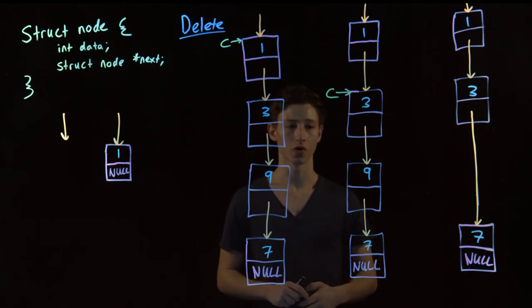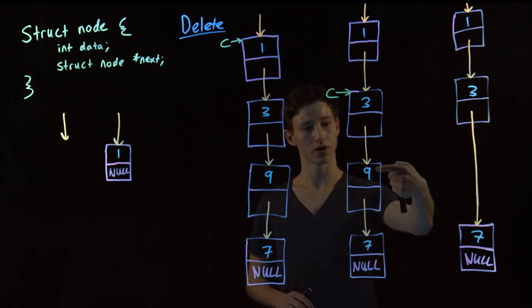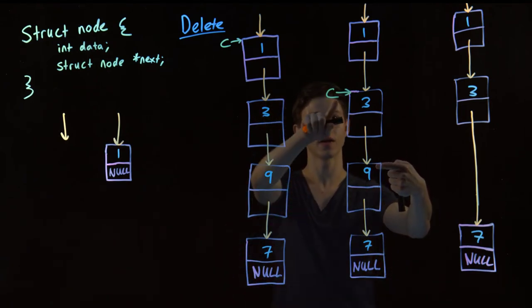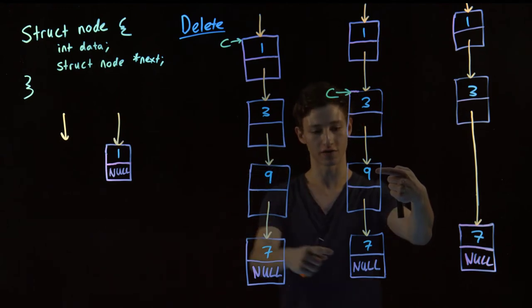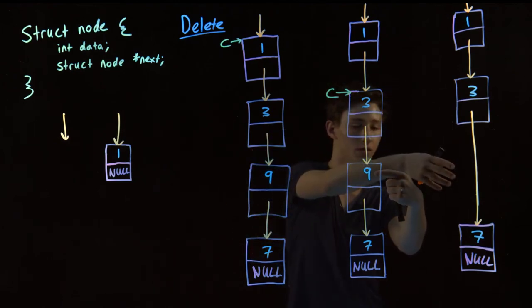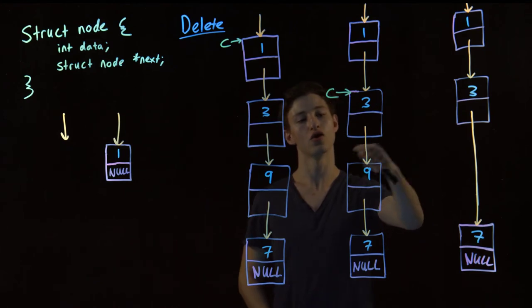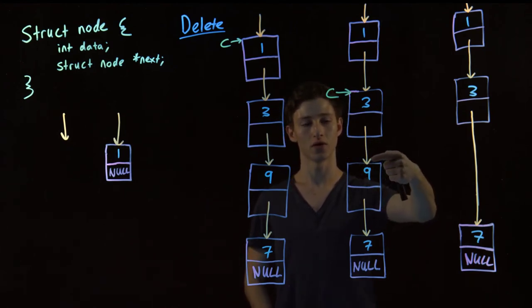So what can we do? Well, the first way we can solve this is we can have a temp pointer point to this node, and then we can get this current next to point to this final node, current next next. Now, then we'll have our list look like this, which is displayed here, and then we'll be able to free the node pointed to by temp. So that would work.